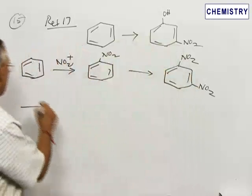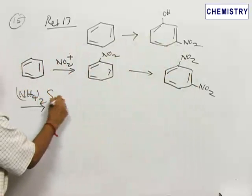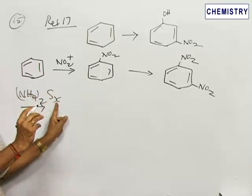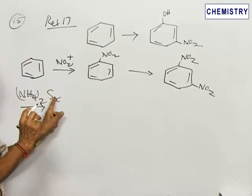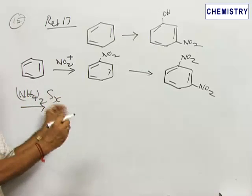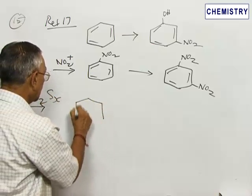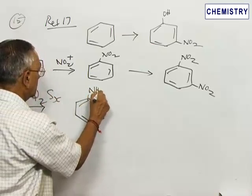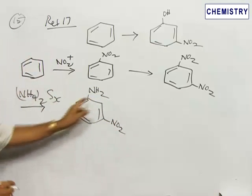There is a route for that: treatment with ammonium polysulfide, which is ammonium sulfide with excess sulfur. The formula is (NH4)2Sx, where Sx means multiple sulfur atoms are present in the molecule. This gives a very selective reduction where only one nitro group gets reduced to amino, while the other nitro group remains intact.